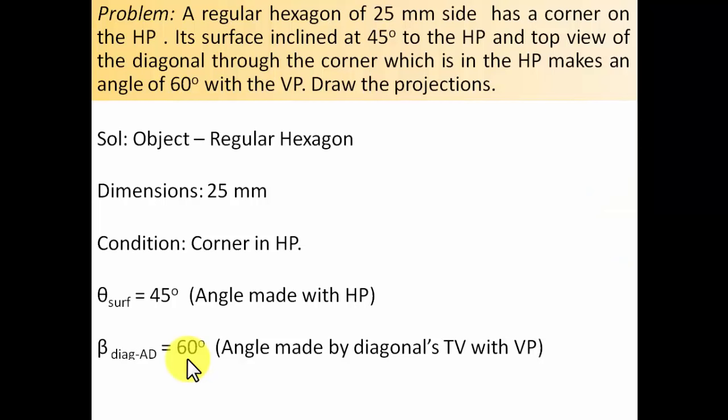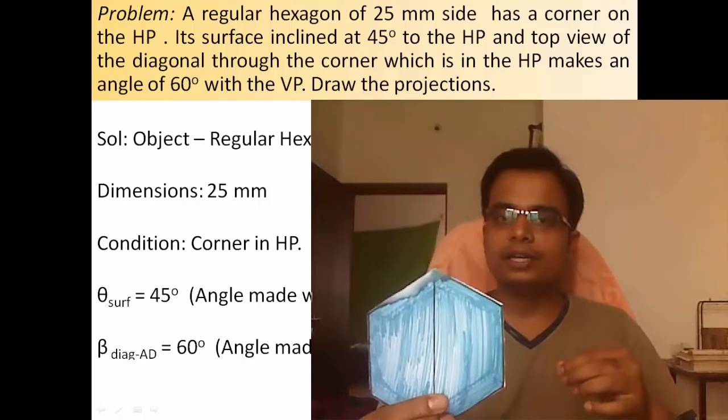The solution is divided into two parts. In Part 1, I'll give a demonstration of how the object is kept, what the initial assumption should be, and whether to begin with the front view or top view. In Part 2, we'll simply draw — implementing everything planned in Part 1 in the form of orthographic projection.